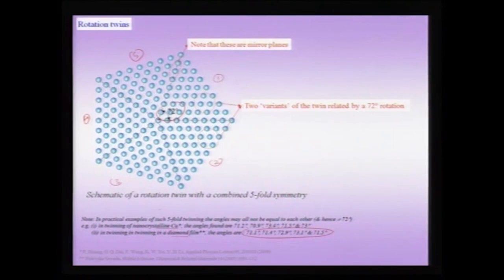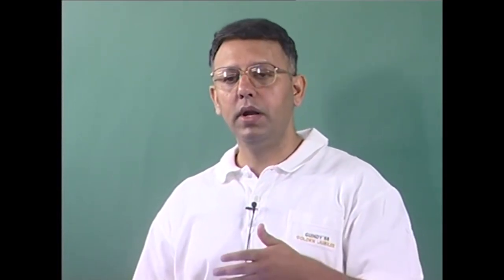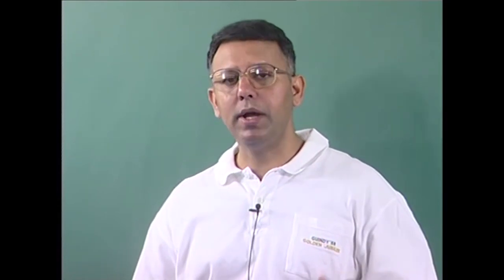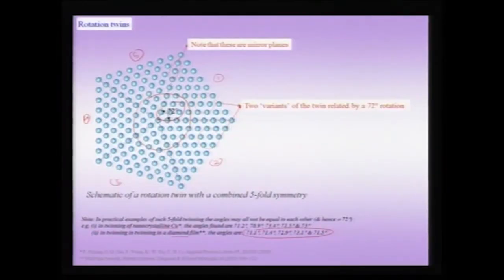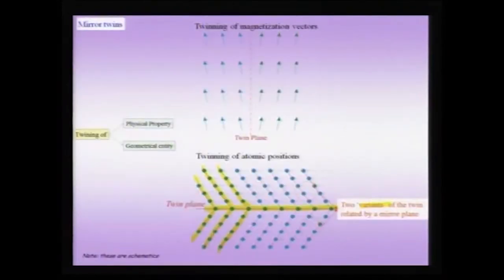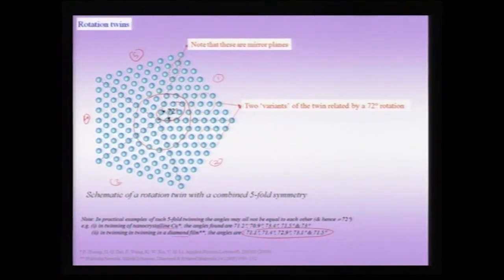If one were to take a selected area diffraction pattern from a region around the center, you would observe a five-fold symmetry. It is as if this twinned variant mimics a higher symmetry, because the crystal itself does not have five-fold symmetry, but the combination of these five variants of the twin can mimic a higher symmetry — in this case five-fold. Therefore, you can have reflection twins with a mirror plane and reflection of atomic positions, but in addition you can also have rotation twins wherein one variant is rotated with respect to the other by a rotation operation that is not inherent to the crystallite.